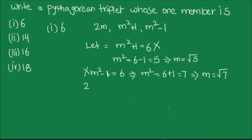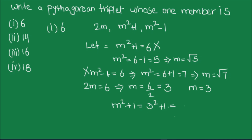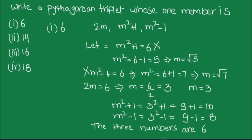So we take 2m equals 6, which gives m equals 6÷2 equals 3, and 3 is a positive integer. Now we can find the other two numbers: m²+1 equals 3²+1 equals 9+1 equals 10, and m²-1 equals 3²-1 equals 9-1 equals 8. So the three Pythagorean triplet numbers are 6, 8, and 10.